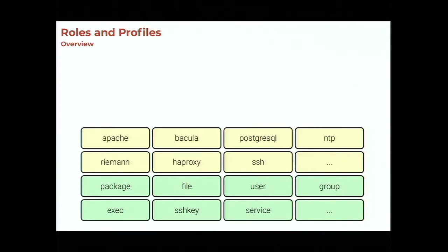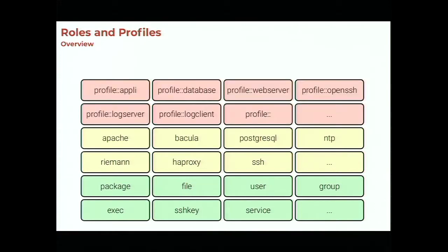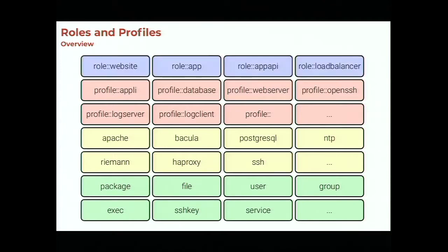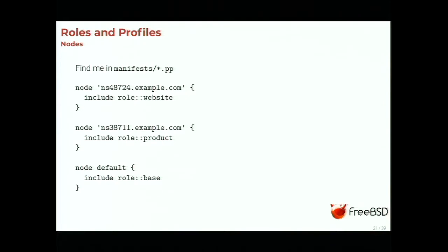The role and profile pattern adds two more abstraction layers. Profiles sit on top of the modules and hold all your site-specific configurations — for example, web servers and mail servers configured using the modules but providing a simpler interface. Above this you have roles. The idea is that when you have a computer, you give it a role: this machine has the web server, this is the build server with Jenkins, etc. A node uses a single role; a role is composed of many profiles; and profiles use various modules and resources.